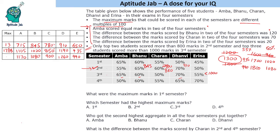Possibilities for equal marks include: 1st and 2nd, 1st and 3rd, 1st and 4th, 2nd and 3rd, 2nd and 4th, 3rd and 4th. First and third cannot be equal because maximum marks differ. Second and third is definitely not equal. For second and fourth: 50% of 2nd semester is 715. For 3rd and 4th: even if we take 1105 or 1170, that as 50% means the total would not be a multiple of 100. So 3rd and 4th cannot be equal.